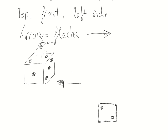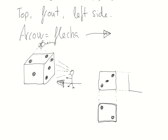Where is the front? The front is as if you were here, looking at the dice from this point of view. And then we will draw the front with the number three on its surface. It's very important to put first of all the top here above, and then the front, and at the right side, the left side.